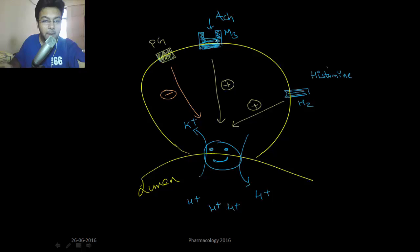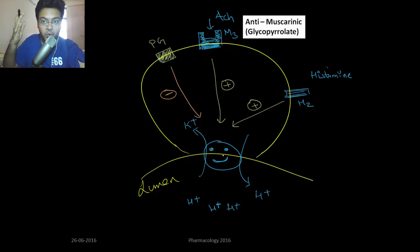Acetylcholine via M3 receptors, which are present everywhere, stimulates acid secretion. M3 receptors stimulate the proton pump. So if you want to decrease acid secretion, give anti-muscarinic like glycopyrrolate.